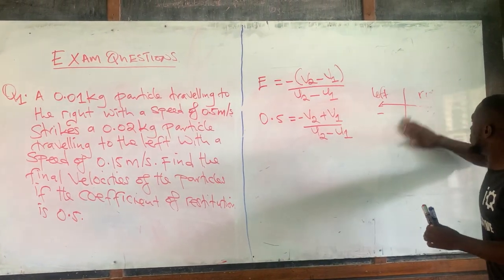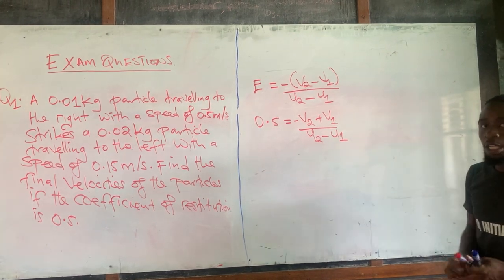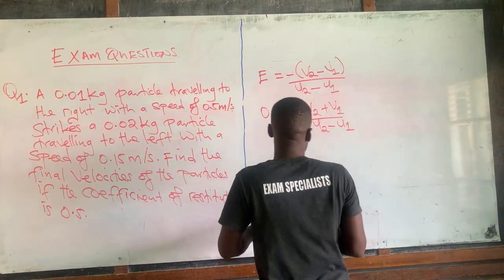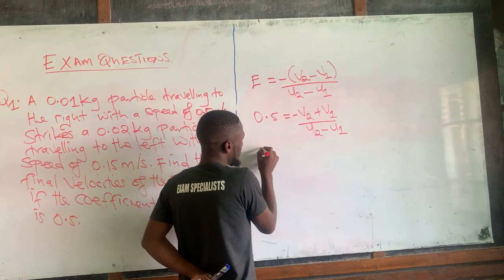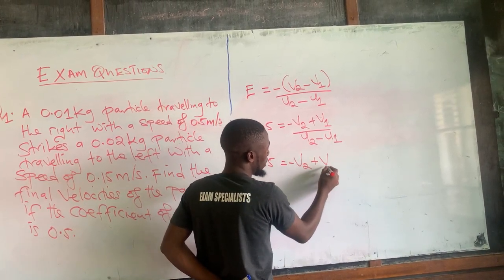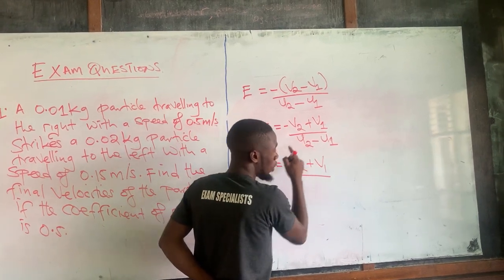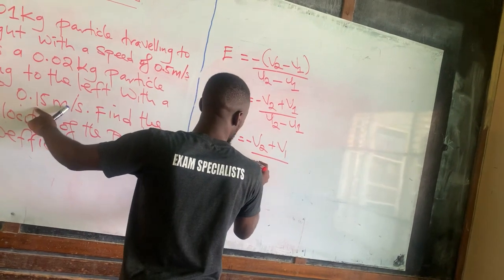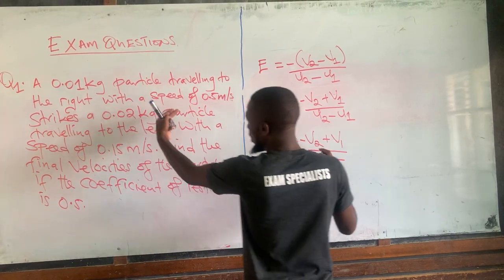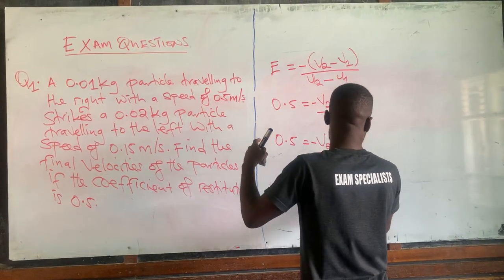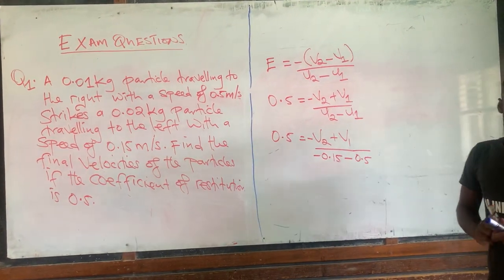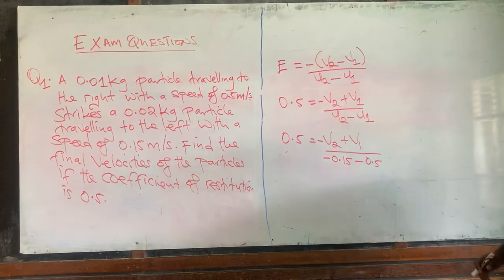So substituting: 0.5 equals negative (v2 minus v1) over (negative 0.15 minus 0.5). By cross multiplication: negative v2 plus v1 equals 0.5 multiplied by (negative 0.15 minus 0.5). This gives: negative v2 plus v1 equals negative 0.075 minus 0.25.